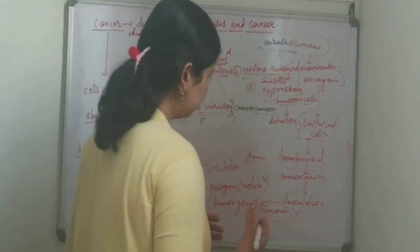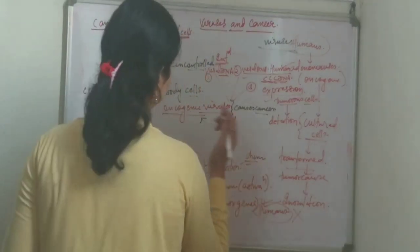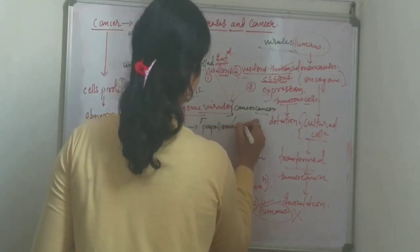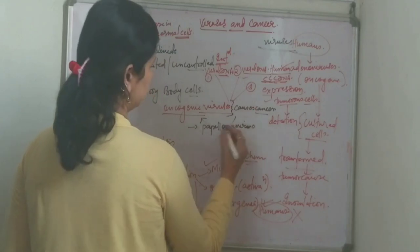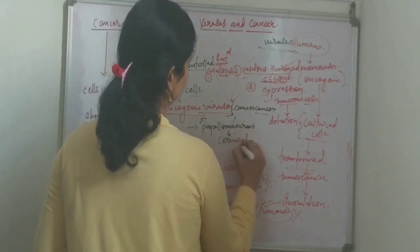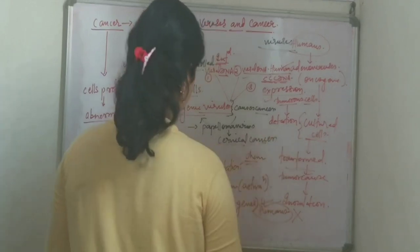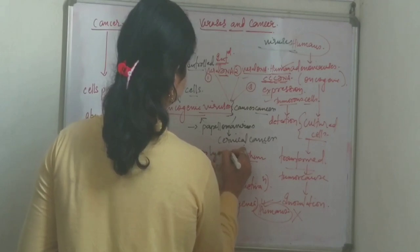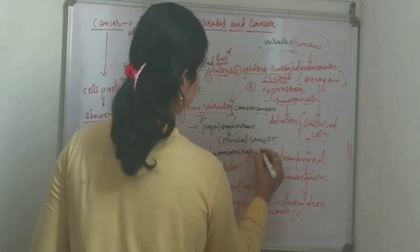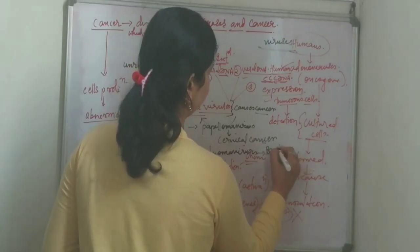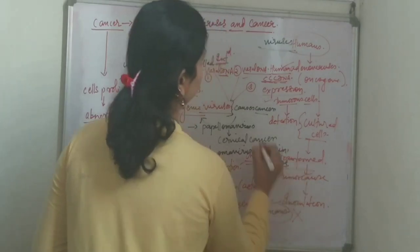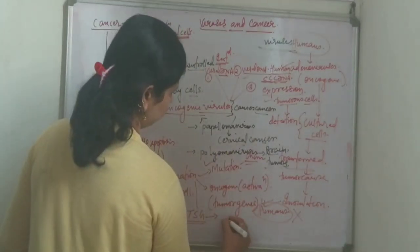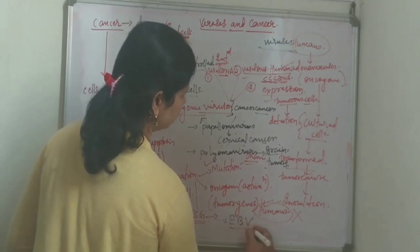Now we will see some examples of tumorigenic or oncogenic viruses. The first example is papilloma viruses, which cause cervical cancer in humans. The second example is polyoma viruses, which can cause brain tumors. The third example is Epstein-Barr virus, or EBV.